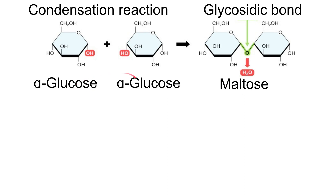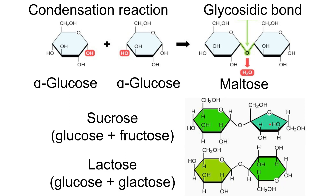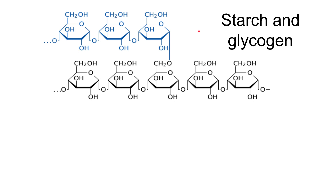When alpha glucose reacts with alpha glucose, the product is maltose. Because we have two monosaccharides, maltose is known as a disaccharide. The second disaccharide you need to know is sucrose, made of glucose bonded to fructose. The third is lactose, which is glucose bonded to galactose. You need to know the name of each disaccharide, the monosaccharides used to produce it, the type of reaction, and the name of the bond.